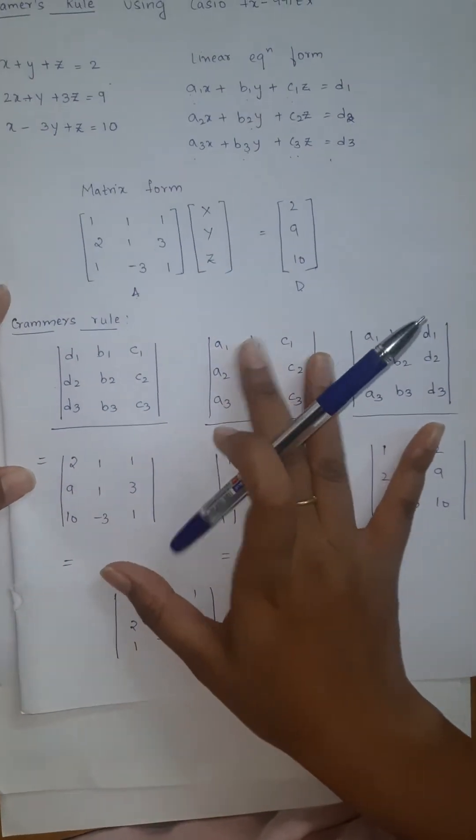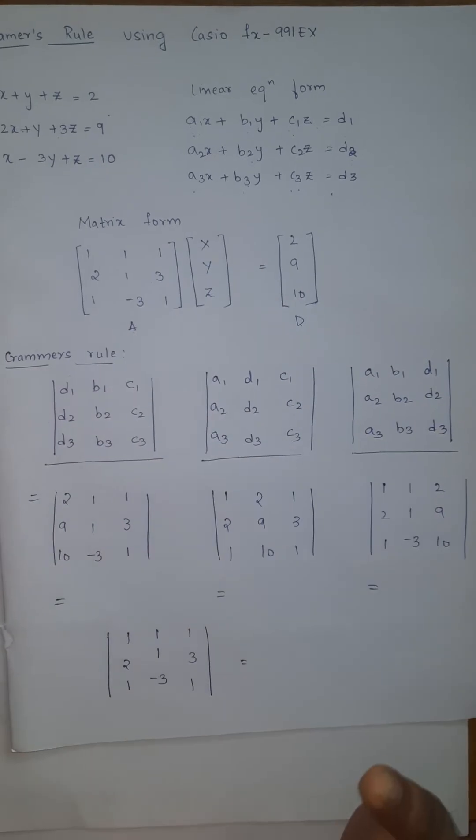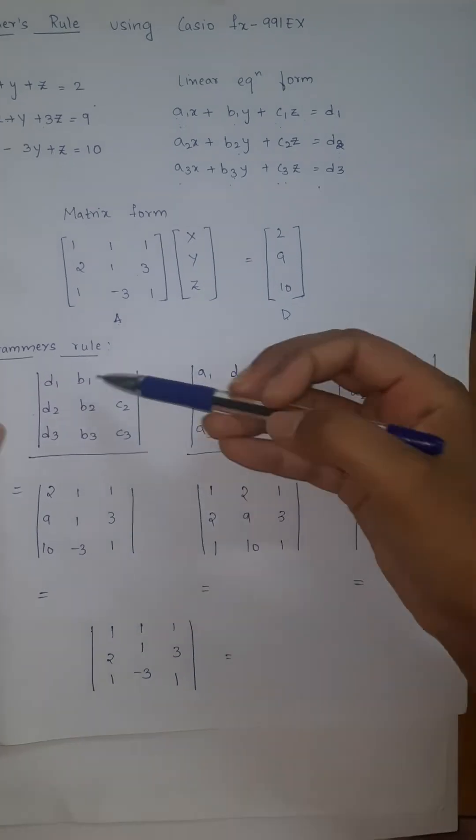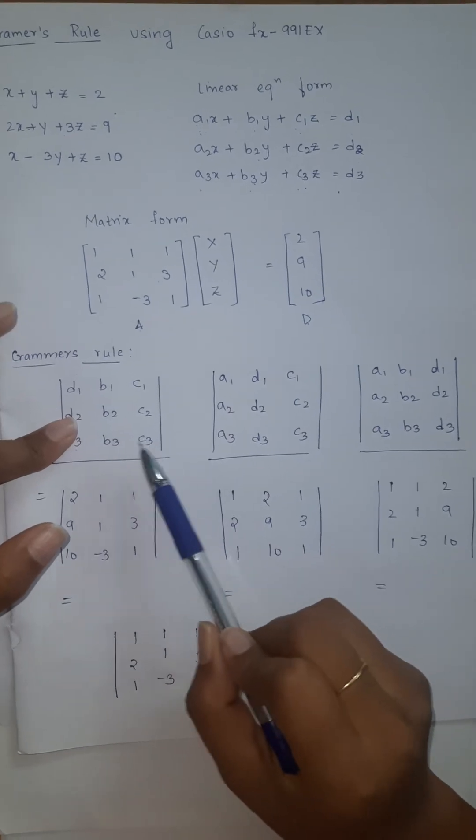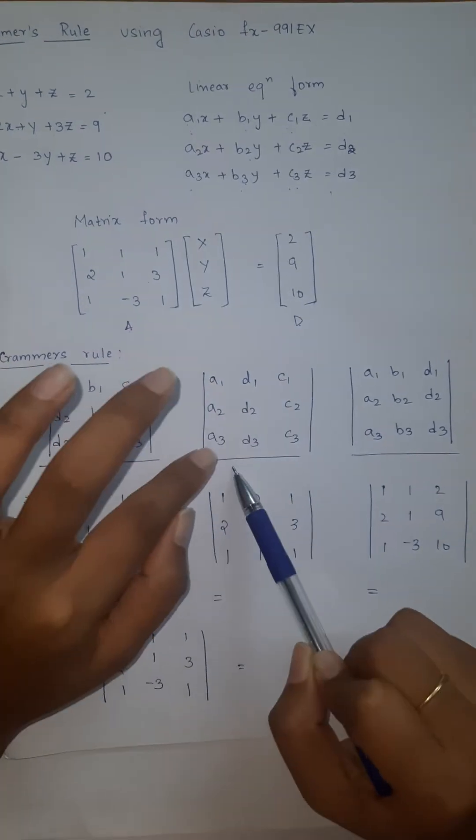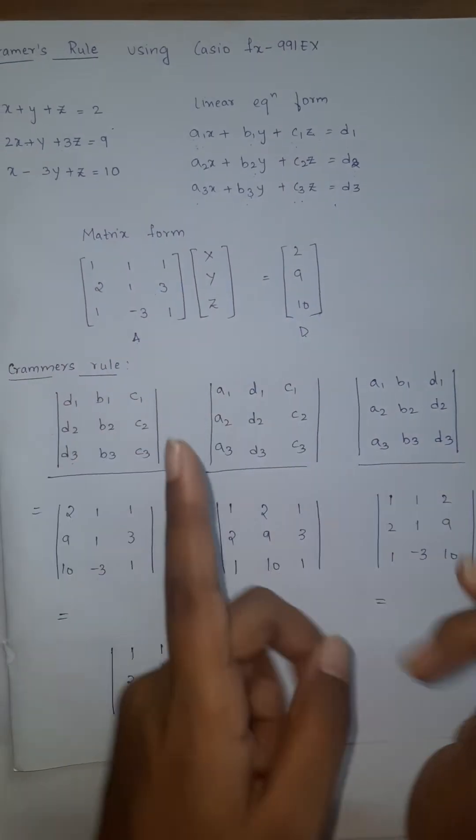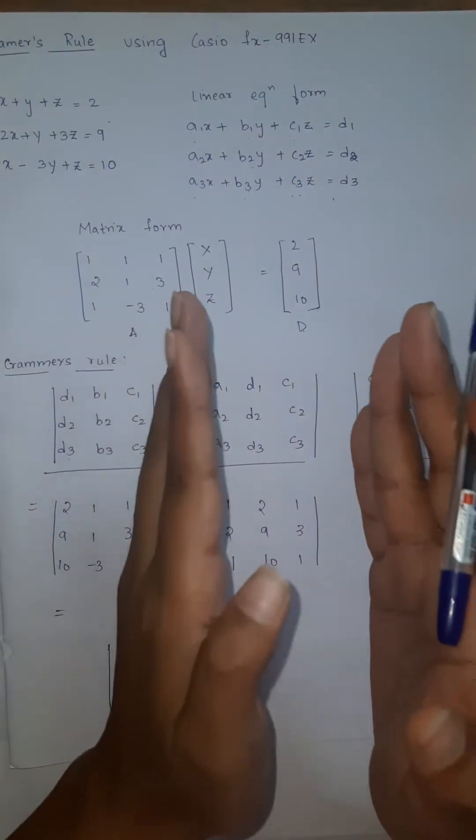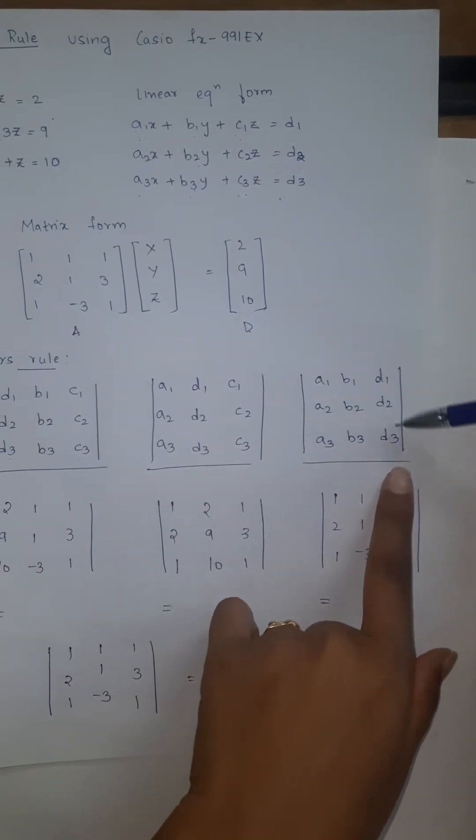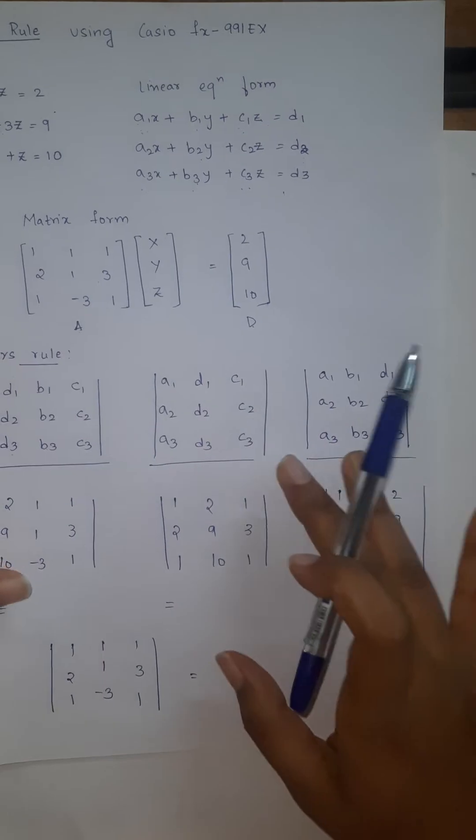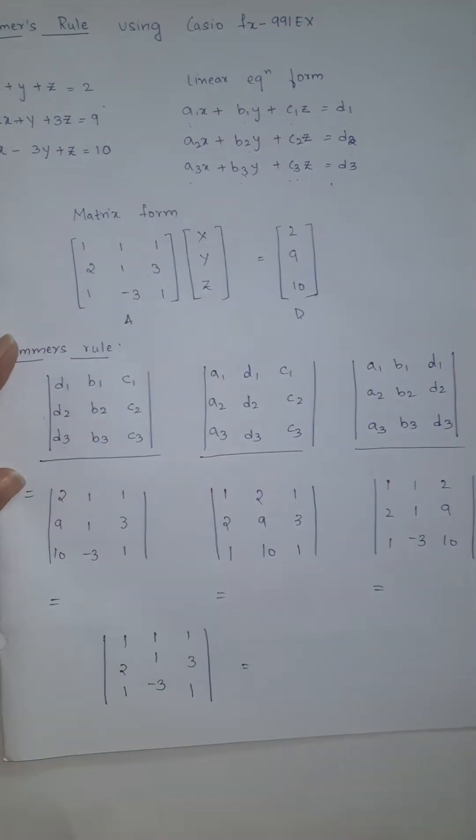Now first, Cramer's rule, what we are going to do is write the determinant of a matrix. How we are finding is the first column we are replacing with D and the remaining we are keeping it as it is. Same thing for the second one, the middle column we are replacing it with D. Coming to here, last column we are replacing with D, remaining two as it is. This is the form, you need to just fill in the values then find the determinant of the matrix.